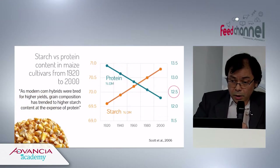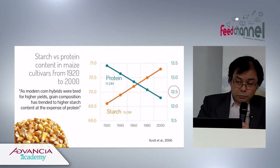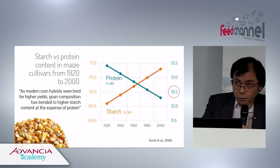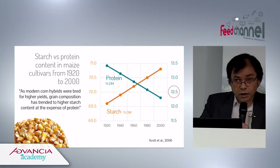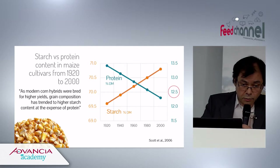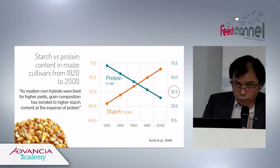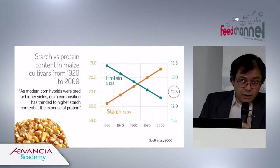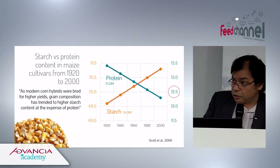Another historical example: some researchers tracked the evolution of maize cultivars from the 1920s to the 2000s. What they found, when looking at starch and protein content, is that selection worked very hard to get better yields, but the side effect was that it increased starch content while decreasing protein content.